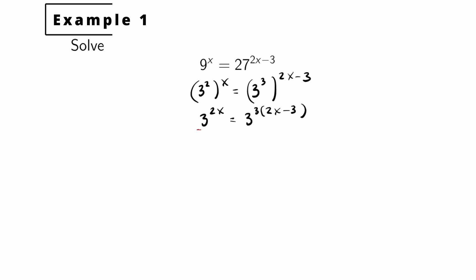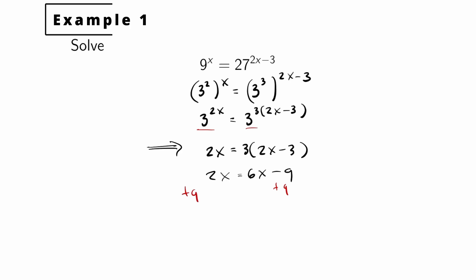Now we have the same base — 3 and 3. Since 3 to the 2X equals 3 to the power of 3 times (2X minus 3), the exponents must be the same. So we must have 2X equals 3 times (2X minus 3). Distributing, we get 2X equals 6X minus 9. Adding 9 to both sides and subtracting 2X gives us 9 equals 4X. Dividing both sides by 4 gives X equals 9 over 4.